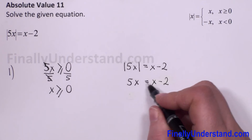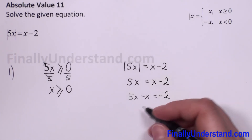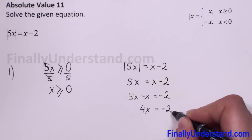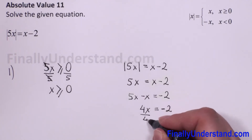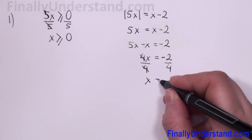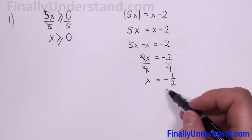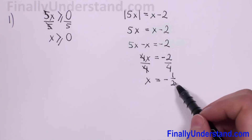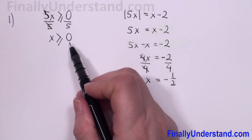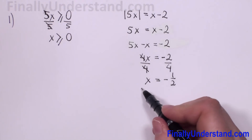I will move x to the left side. So we have 5x minus x, which gives us 4x equals negative 2. I will divide both sides by 4. 4 and 4 will reduce, and we have x equals negative one half. Now we have to check if this solution is included in our domain. Negative one half is not greater than or equal to 0, so this solution is not correct. We can just close this case.